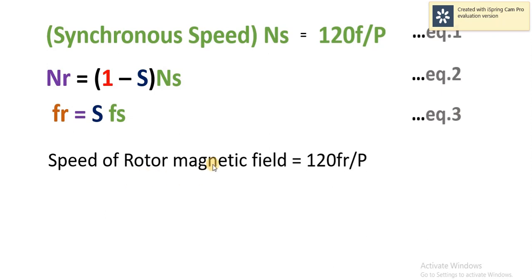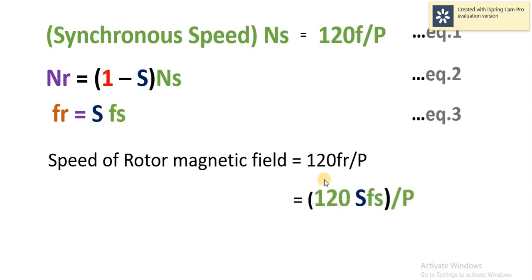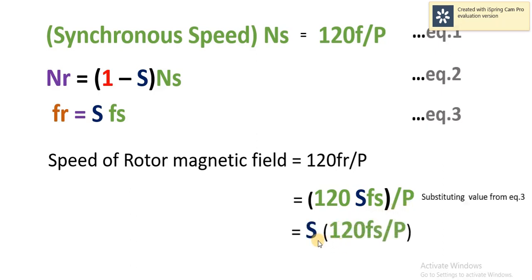The speed of the rotor magnetic field — since the speed of the rotating magnetic field is given by NS = 120F / P, where F is the supply frequency for the stator circuit, and FR is the frequency of alternating current flowing in the rotor circuit — we substitute equation 3 (FR = S × FS) into this formula to get 120 × S × FS / P. Rearranging, we get S times synchronous speed, which is equation number 4.